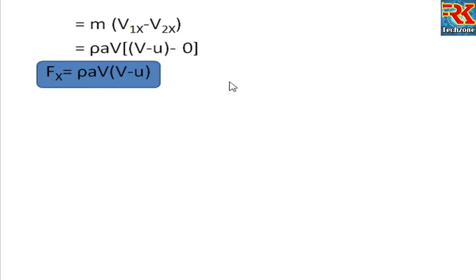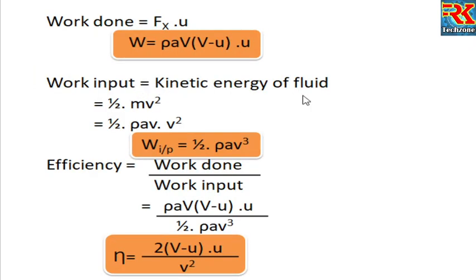Now, for the fixed plate, Fx equals rho A V squared. For the moving plate, Fx equals rho A (v minus u) squared. That is the difference between the fixed and moving plate force equations.